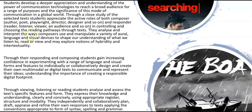You are going to analyze and interpret the ways composers use and manipulate a variety of oral, language, and visual devices to shape our understanding of what we listen to, read, or view, and may explore notions of hybridity and intertextuality. Hybridity is basically when one thing is born of two different things — for instance, a podcast is born of things that used to go onto iPods and broadcasts from radio, turning into one new thing. So it's a hybrid because it's made up of two different texts. Intertextuality — you should remember that from Animals, Monsters, and Machines; if not, go back and revisit it.